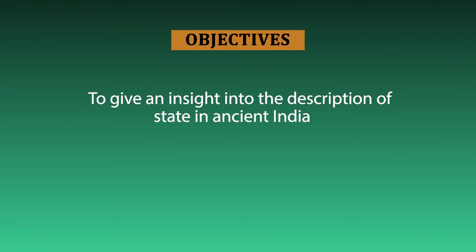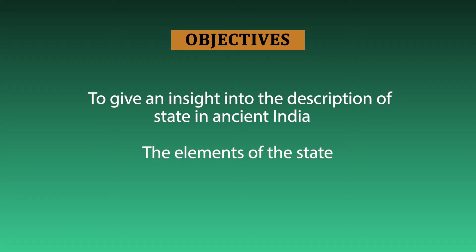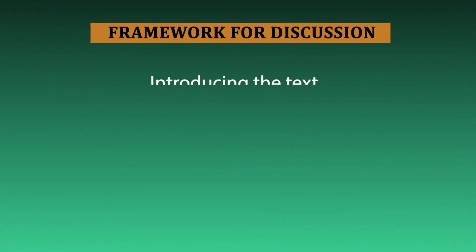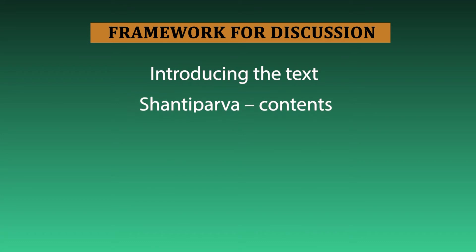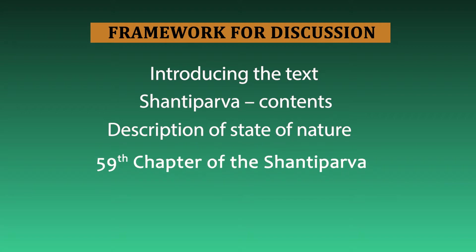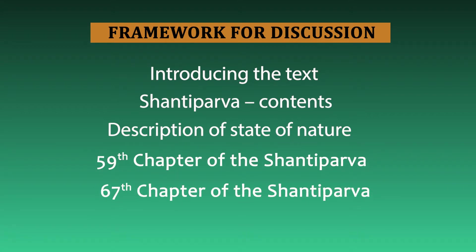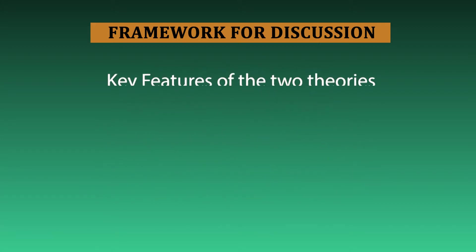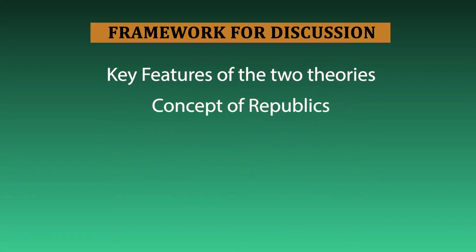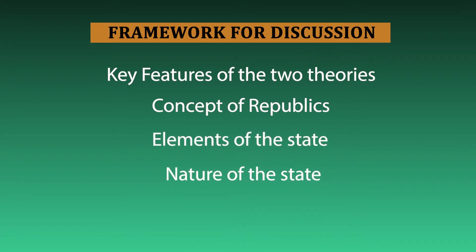Another important aspect that we'll be discussing is the state of nature as described in the Shanti Parva, the description of the state, elements of the state, and functions of the state. For convenience of understanding I have divided the entire lecture into a number of segments. We will start with a brief introduction of the text, then move on to the contents of the Shanti Parva, the description of the state of nature, the 59th and the 67th chapter of the Shanti Parva which speak about the social contract theories, key features of the theories, and finally elements and nature of the state.